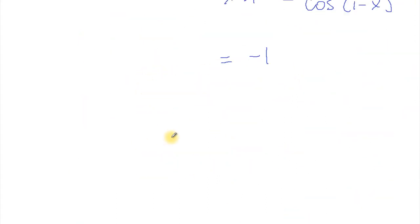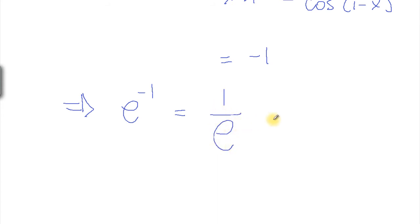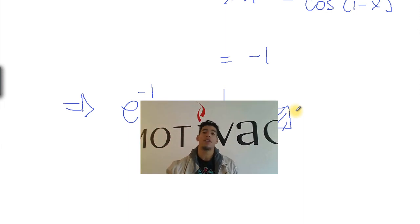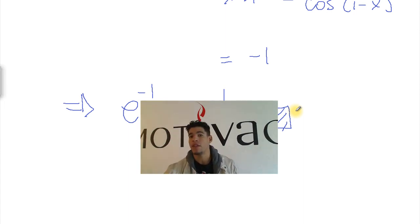So in reality this becomes e to the minus one, which is one over e — and that's our answer. Thanks for watching! Please subscribe at Multival or go to our website www.multival.com. Thank you.